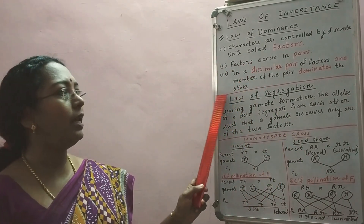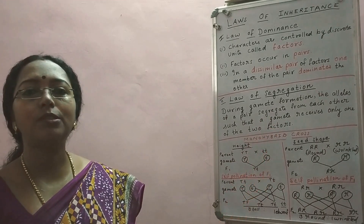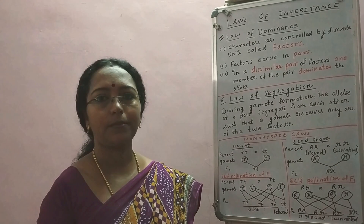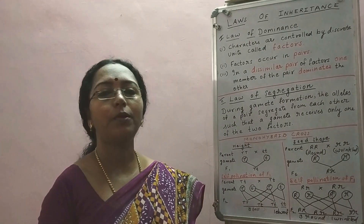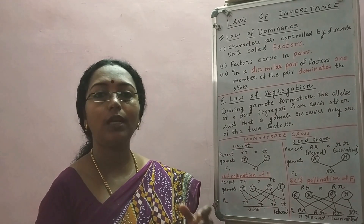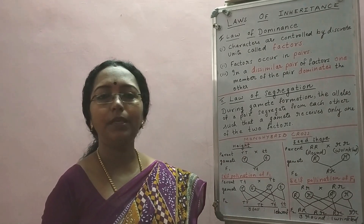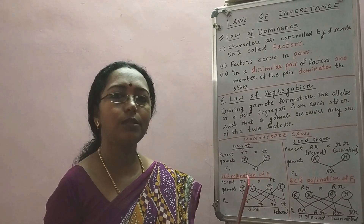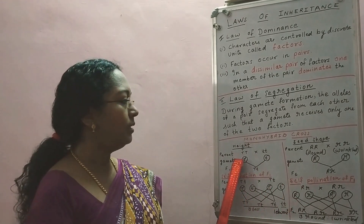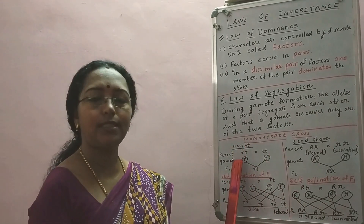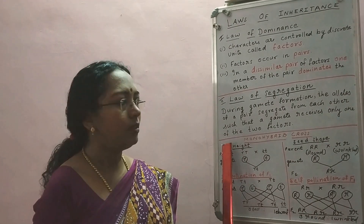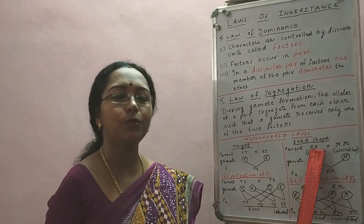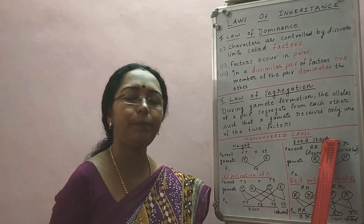The law of dominance and the law of segregation were both proposed by Gregor Mendel based on monohybrid cross. There is one more law proposed by Mendel based on dihybrid cross, which will come in the following sessions. In the previous sessions I took one character — height — for the monohybrid cross. Today, as per requests, I have come with another example too, taking seed shape as the character.